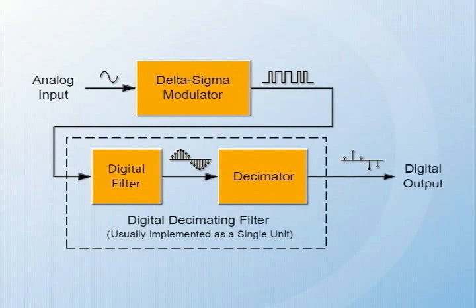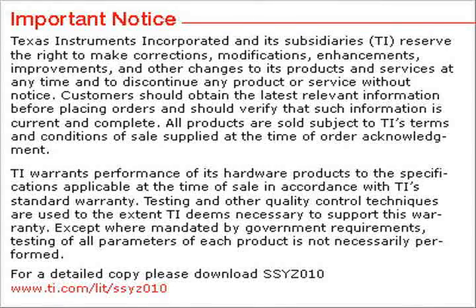We have finished our tour through the Delta-Sigma converter. We started with the modulator, which took in the analog signal, oversampled it, produced a pulse train on the output, pushed the noise into the higher frequencies, and established low noise near the input signal. That one-bit code went into the digital filter, which produced a 24-bit code and slowed down the output to the data rate. There is a close relationship between data rate and resolution — by slowing down the data rate with respect to the sampling frequency, we get extremely high resolution. My name is Bonnie Baker, and it's been my pleasure to take you through the nuts and bolts of the Delta-Sigma converter. Thank you.